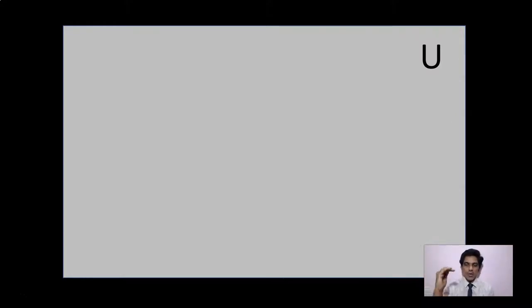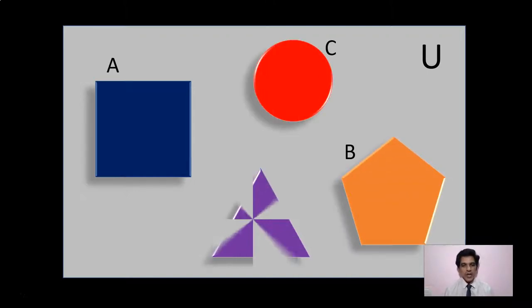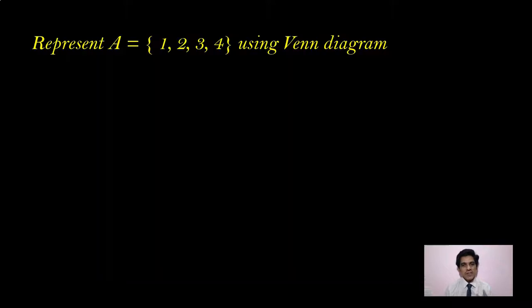You draw a rectangle and write the capital U on the right-hand side top corner — that is the Universal Set. Within this Universal Set boundary, you indicate the sets. To represent a set, you can use any closed figure like a square, rectangle, circle, or triangle. But the circle is the most frequently used.